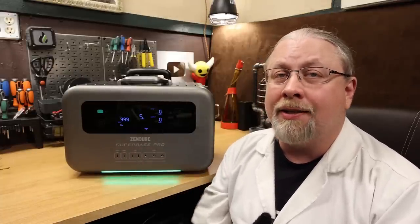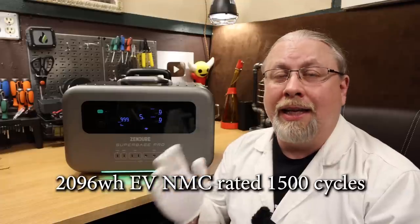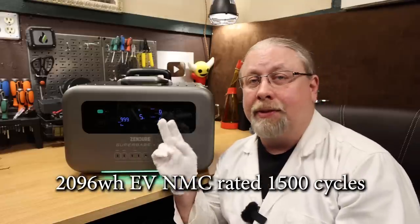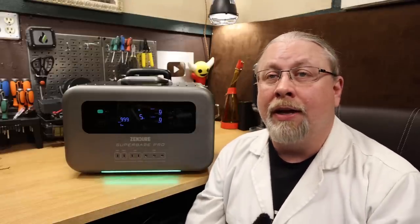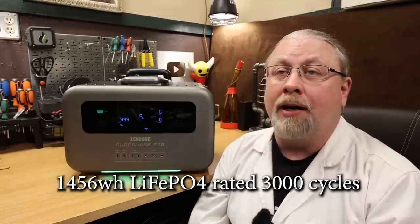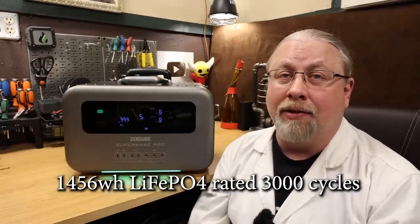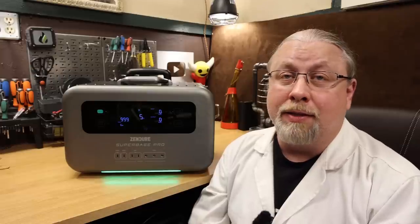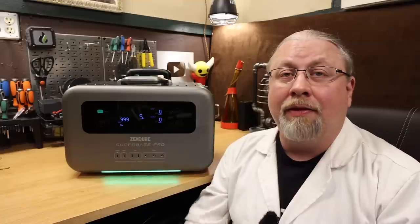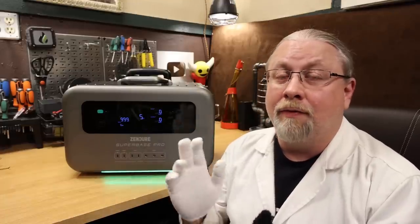As for battery capacity, the SuperBase Pro comes in two different flavors. First is the 2096 watt hour EV grade NMC battery rated at 1500 cycles to 80%. That's what this one is. They also have a lithium iron phosphate version with a 1456 watt hour battery and 3000 cycle life. I believe those are the only differences between the 1500 and 2000 is the battery. They don't have the 1500 out yet for me to review, so they sent me the retail version of the 2000.